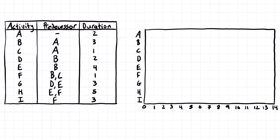If you need to change the order around later for some reason, that's fine. But to get started here, activity A has no predecessor, so this is going to start at the very beginning of our project, and it has a duration of two days. So we're going to come to our Gantt chart here, and we're going to start activity A at zero and come across two days.